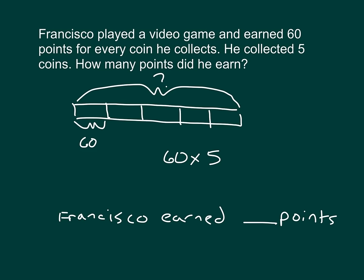60 times 5 can be expressed as 6 times 5 times 10. We can decompose it like that. 6 times 5 is 30, and we have 30 times 10. Francisco earns 300 points.